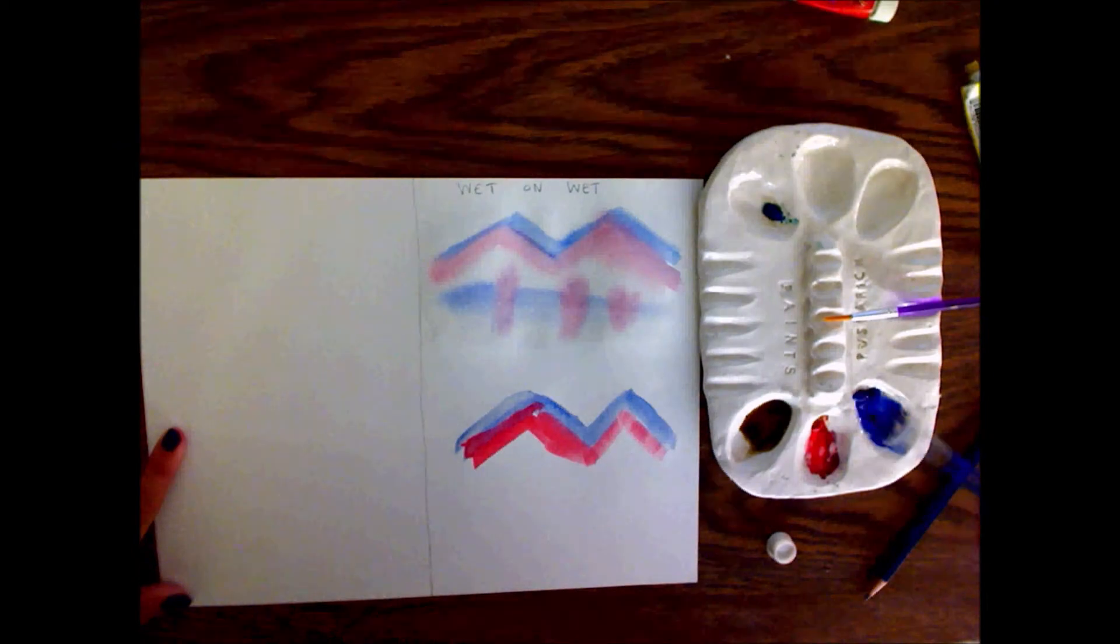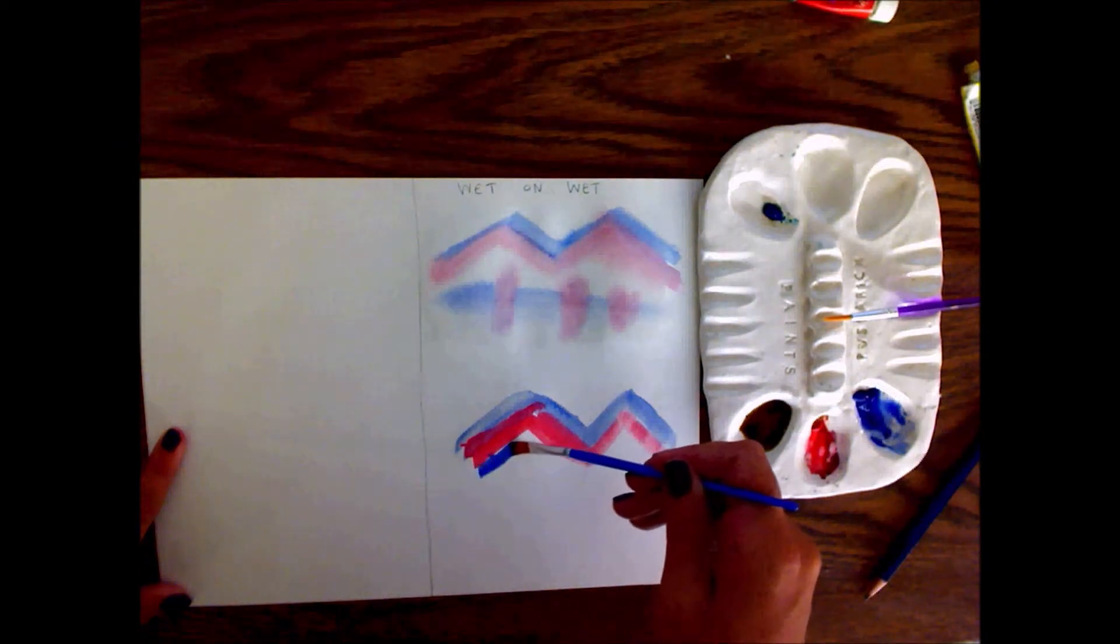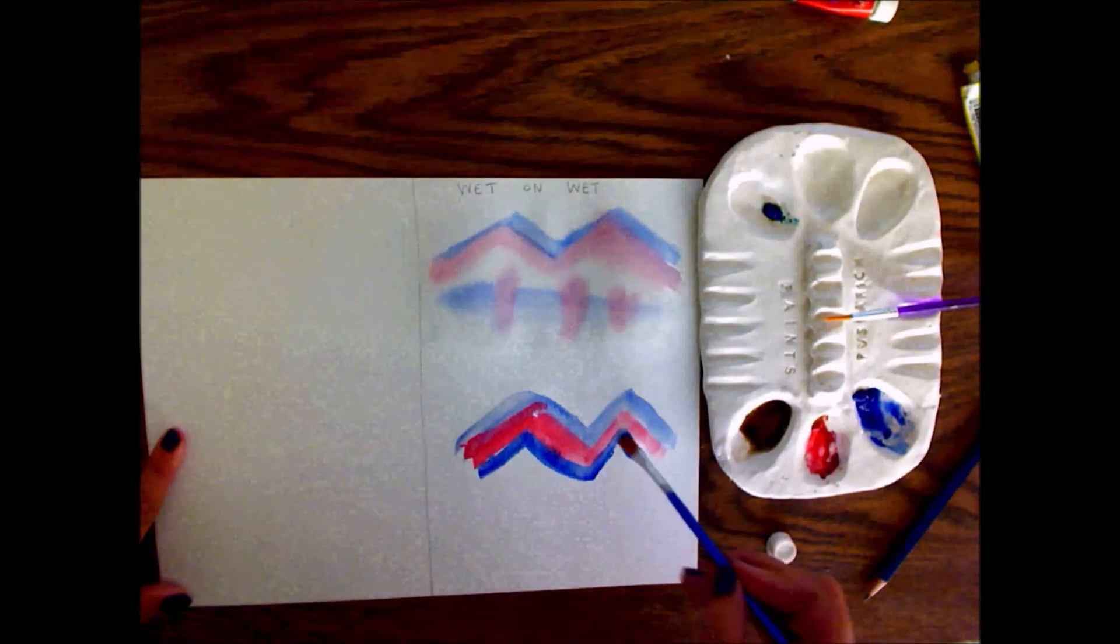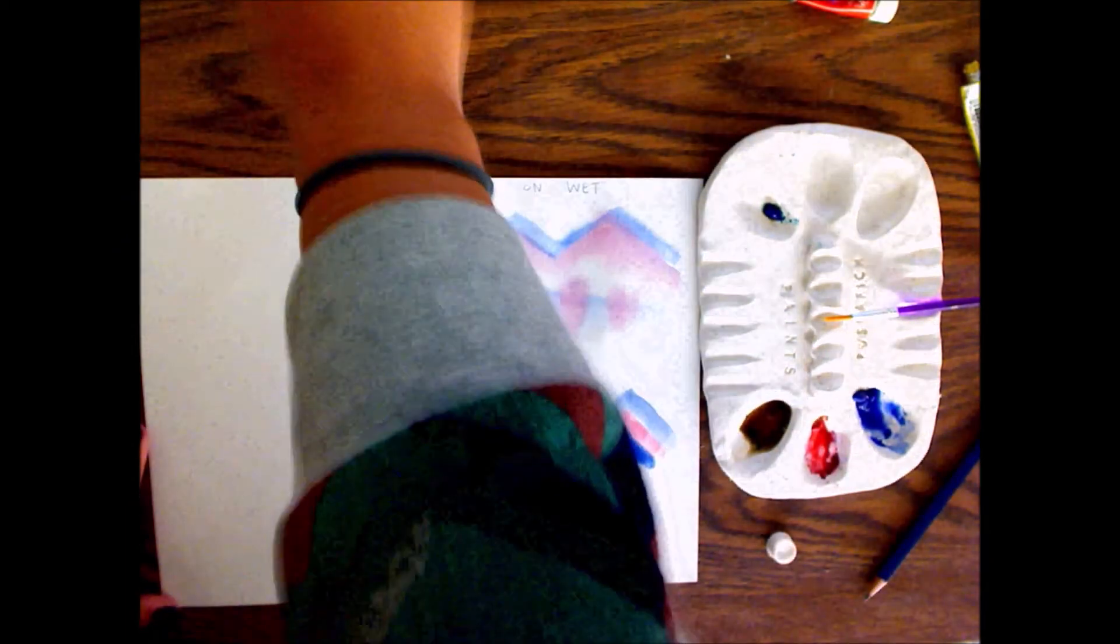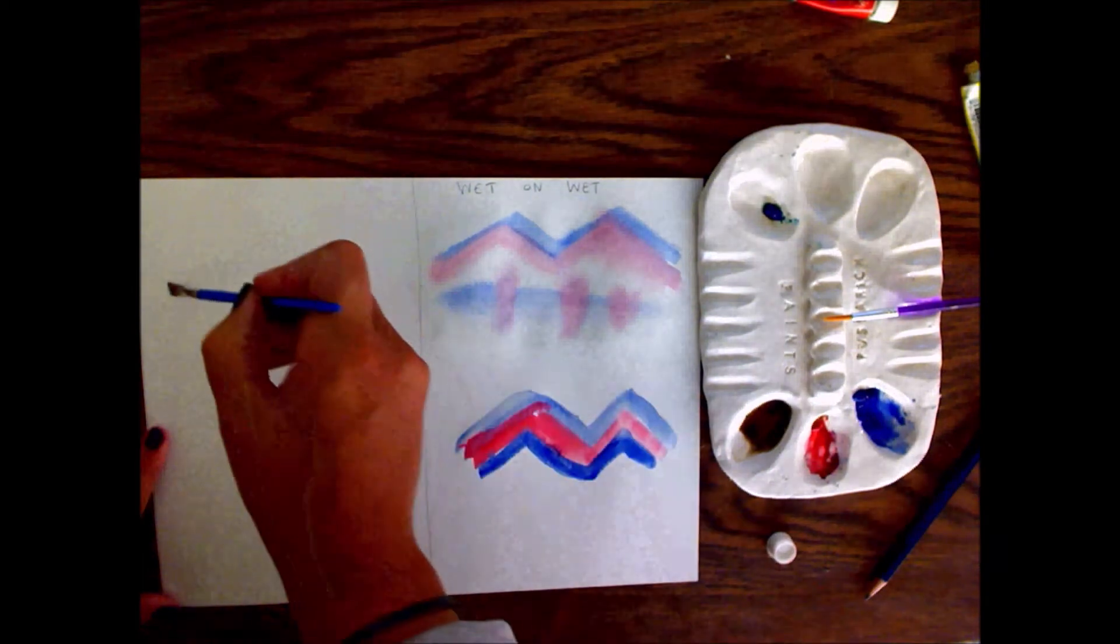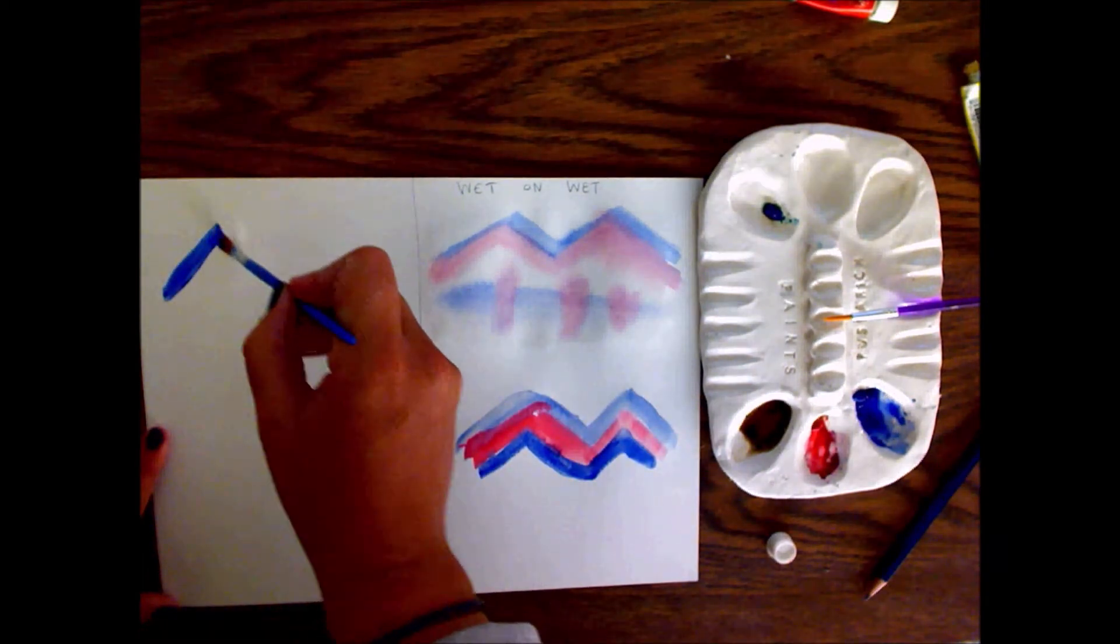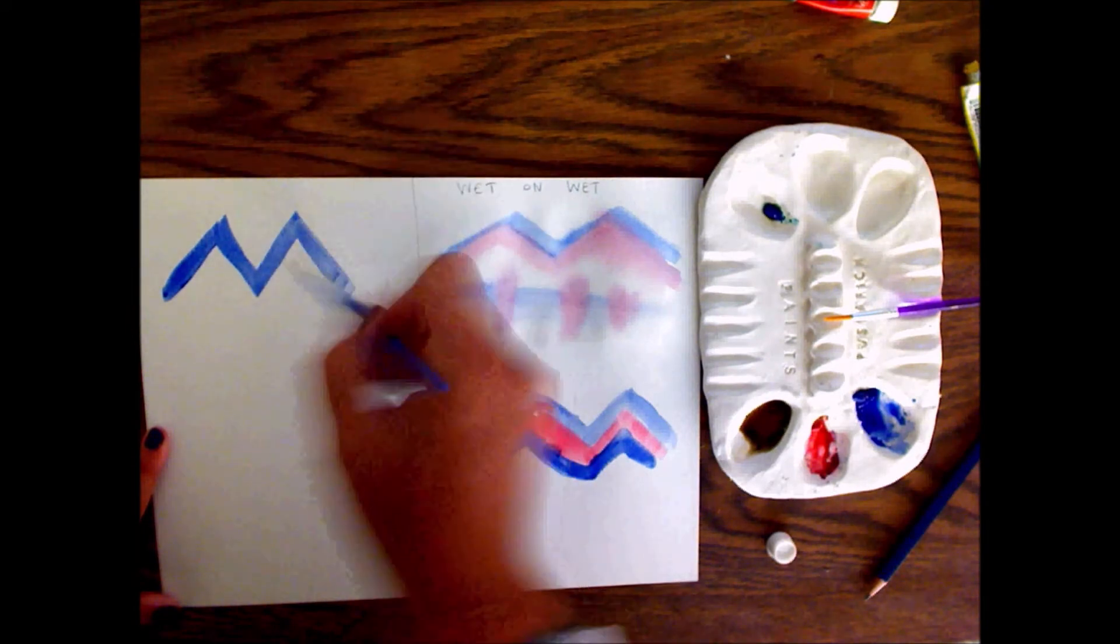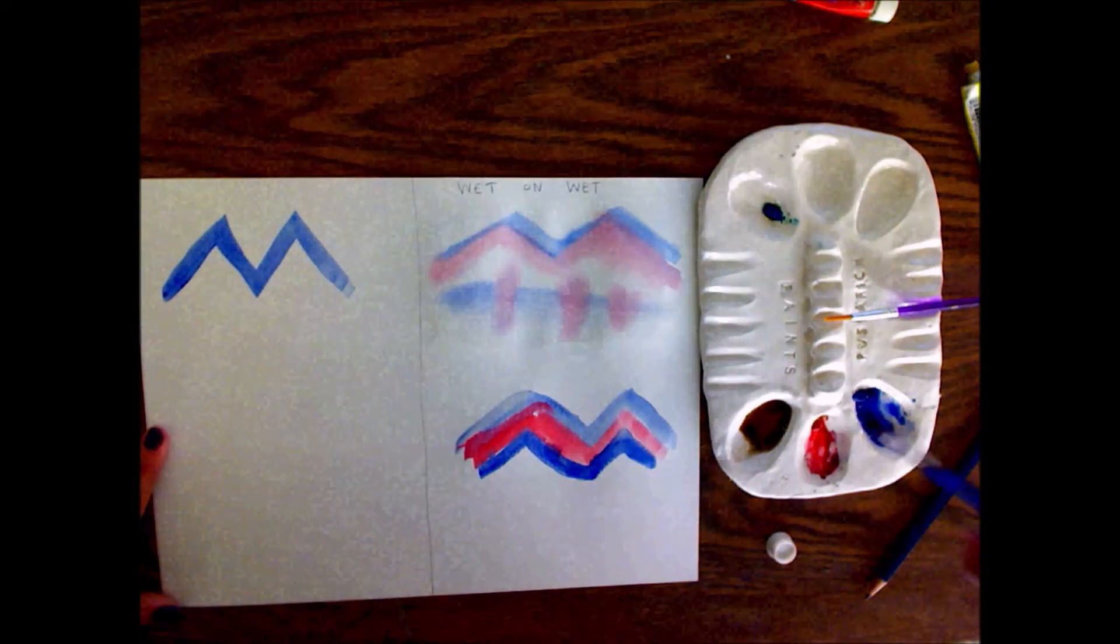The colors tend to be a little bit more vibrant with dry paper underneath it, but they blend together no matter what because they are both wet. So both of the wet pigments bleed into each other.